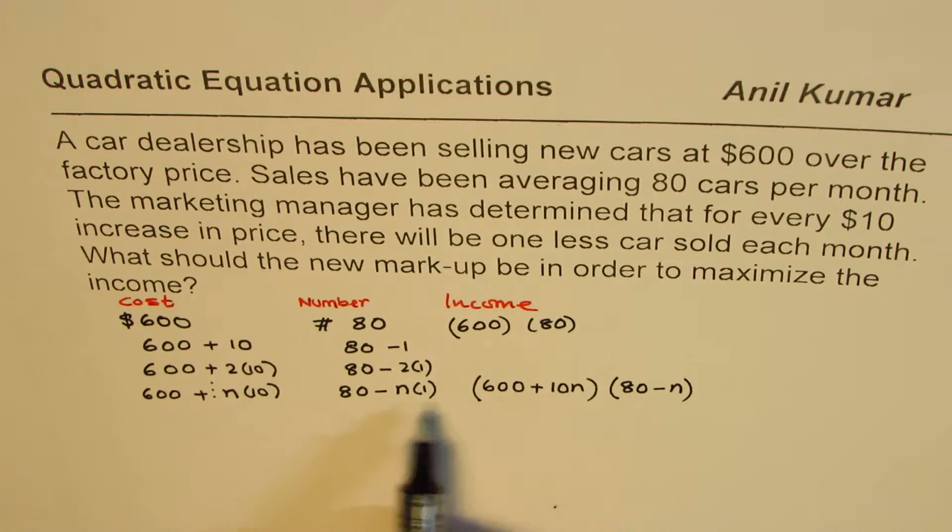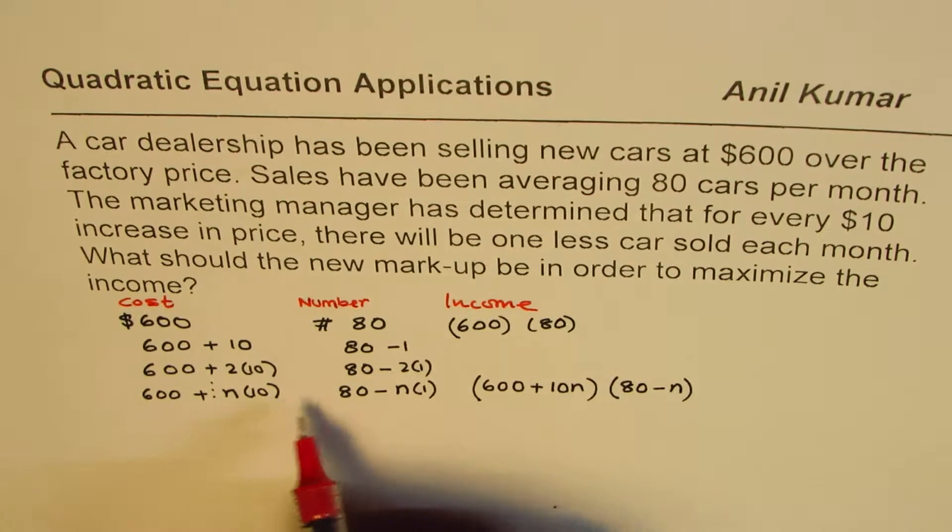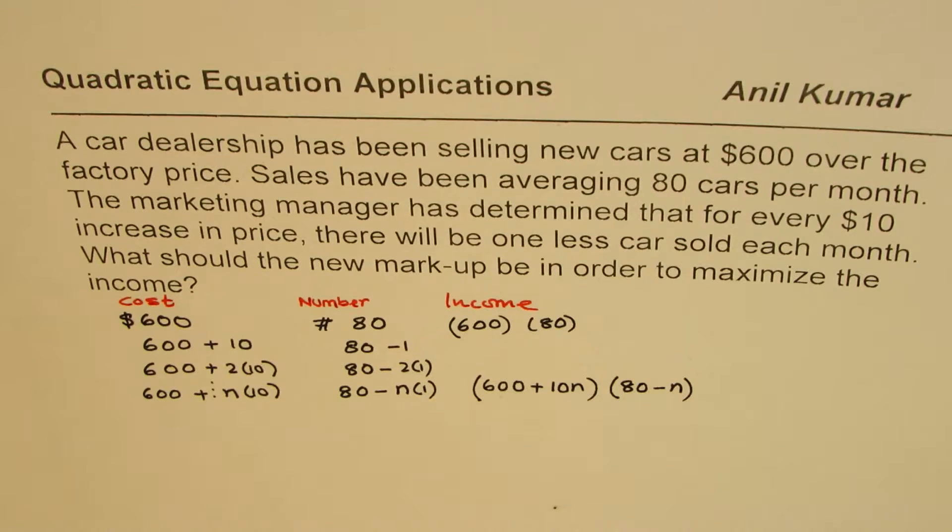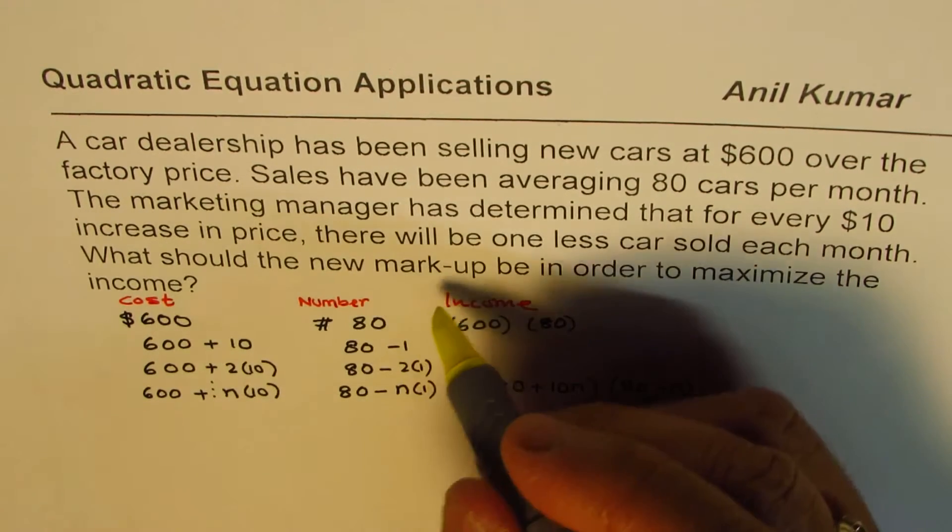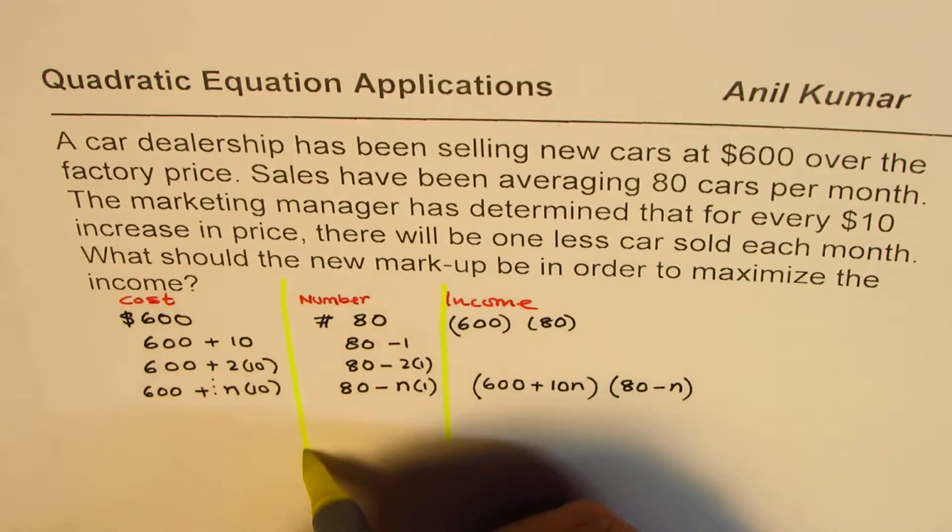So this is a general equation where we're trying to write in terms of the number of $10 increased. Do you get an idea? So we don't know how much $10 increase will actually increase the profit or maximize the profit. We don't know yet.